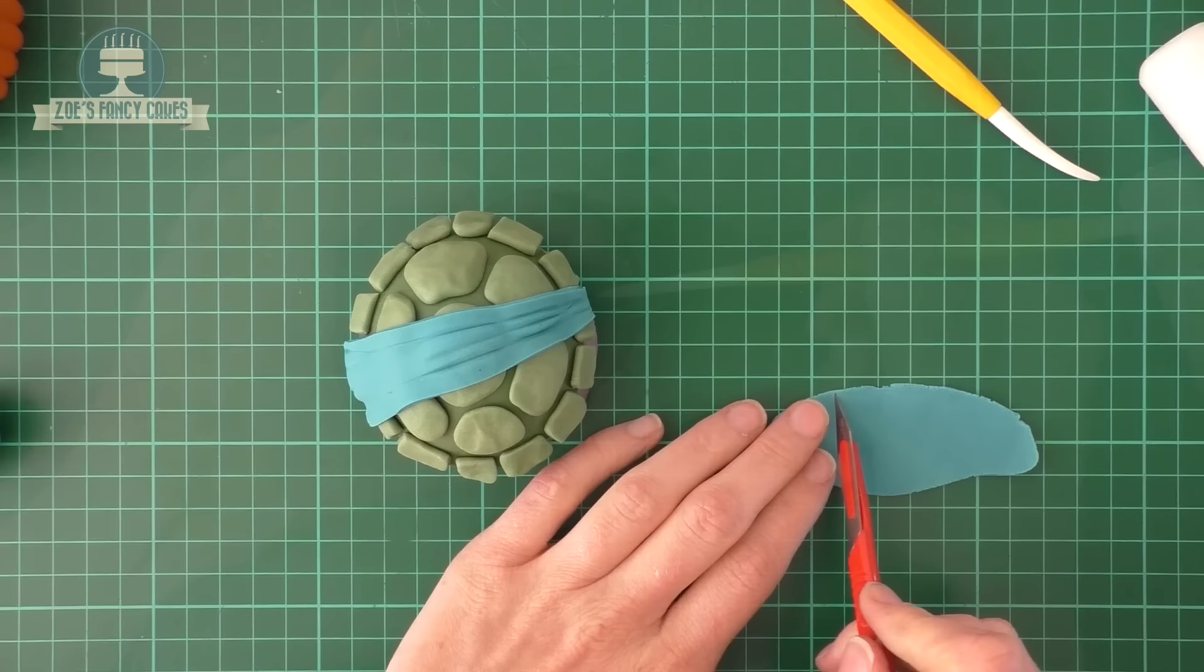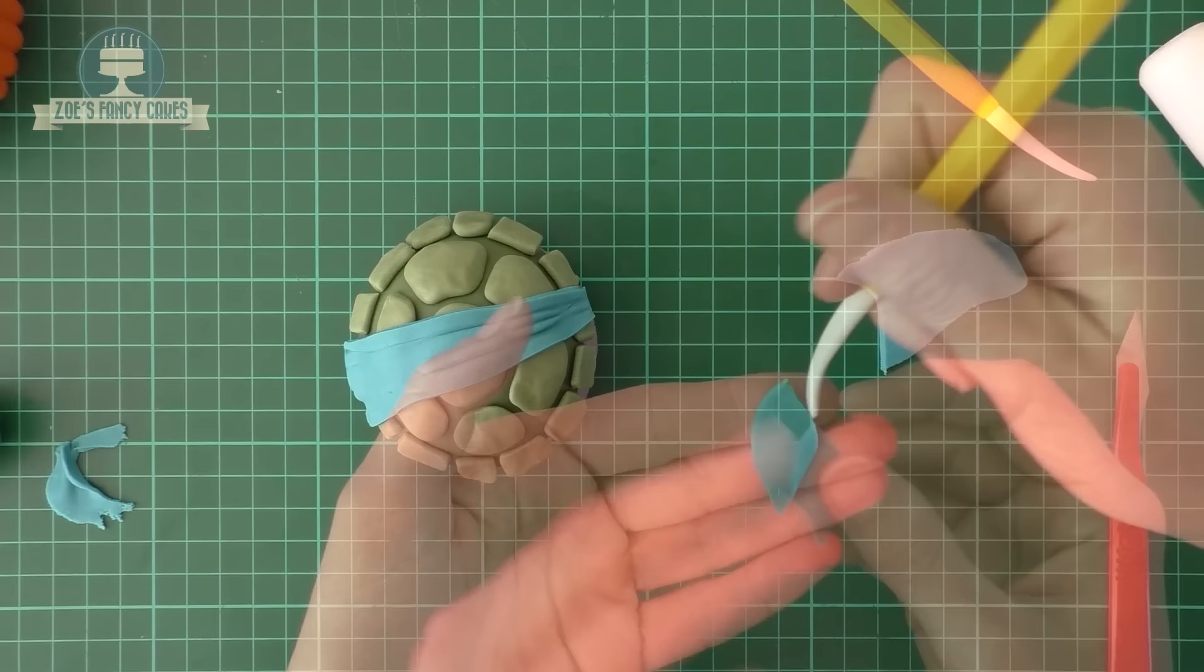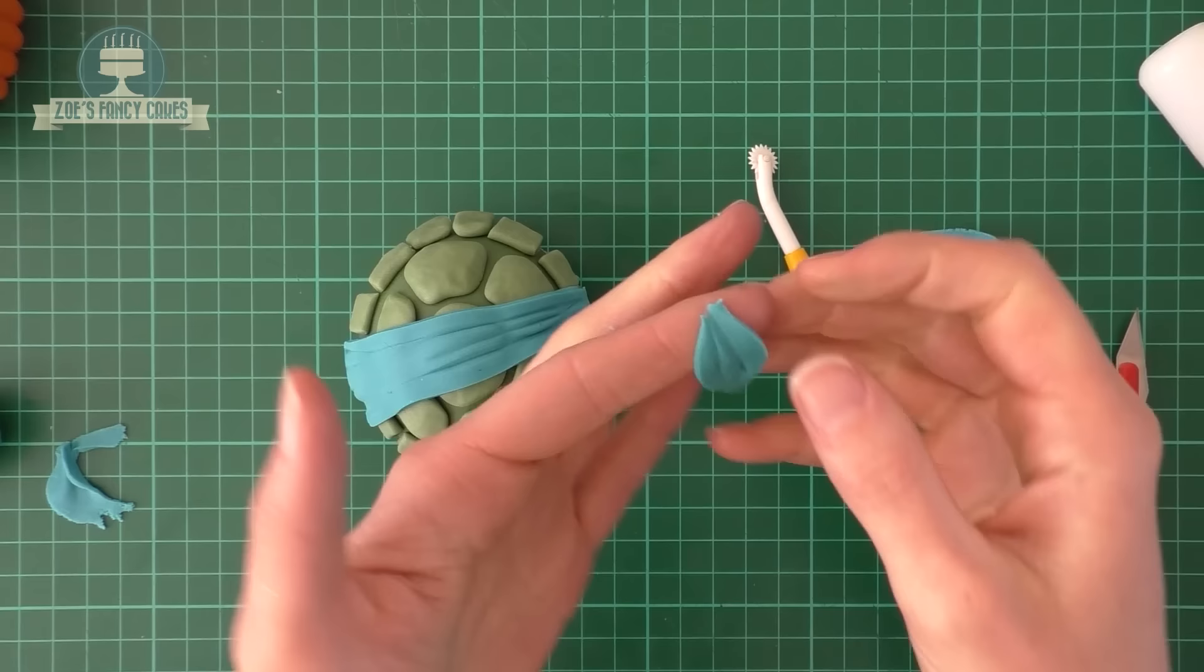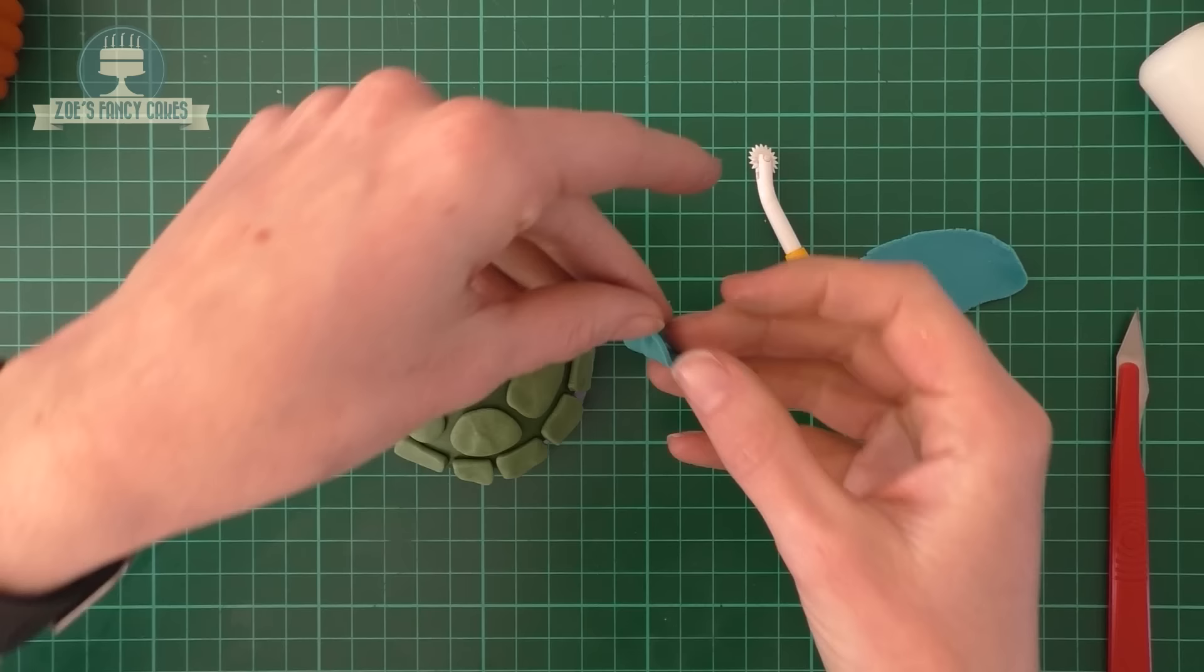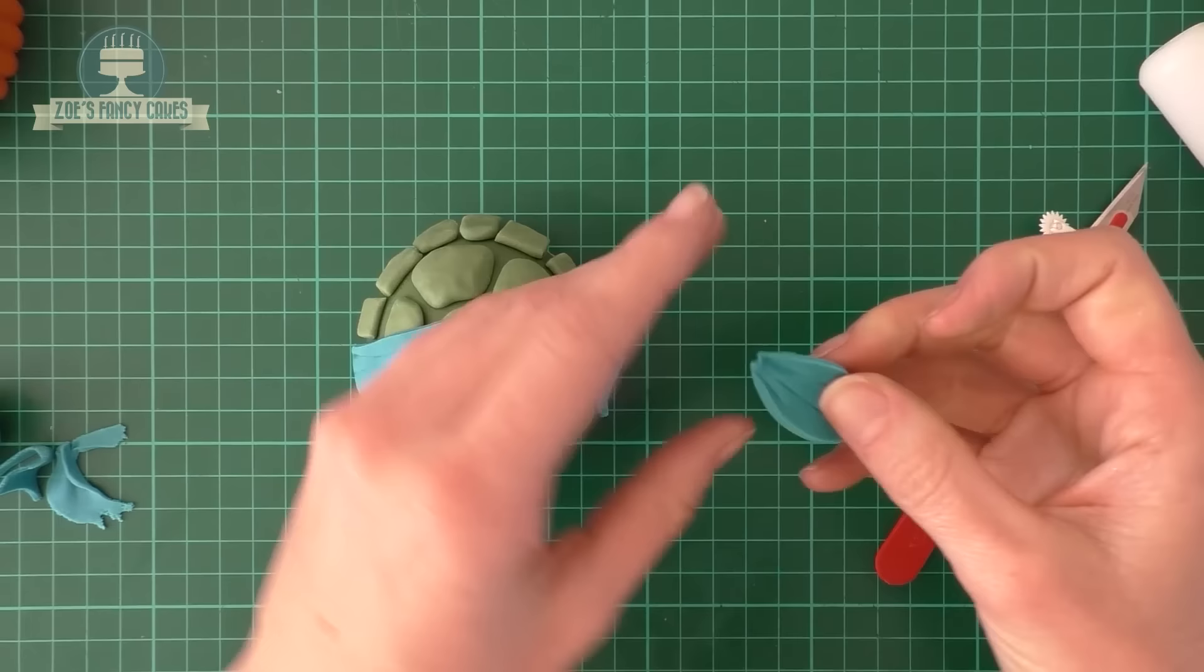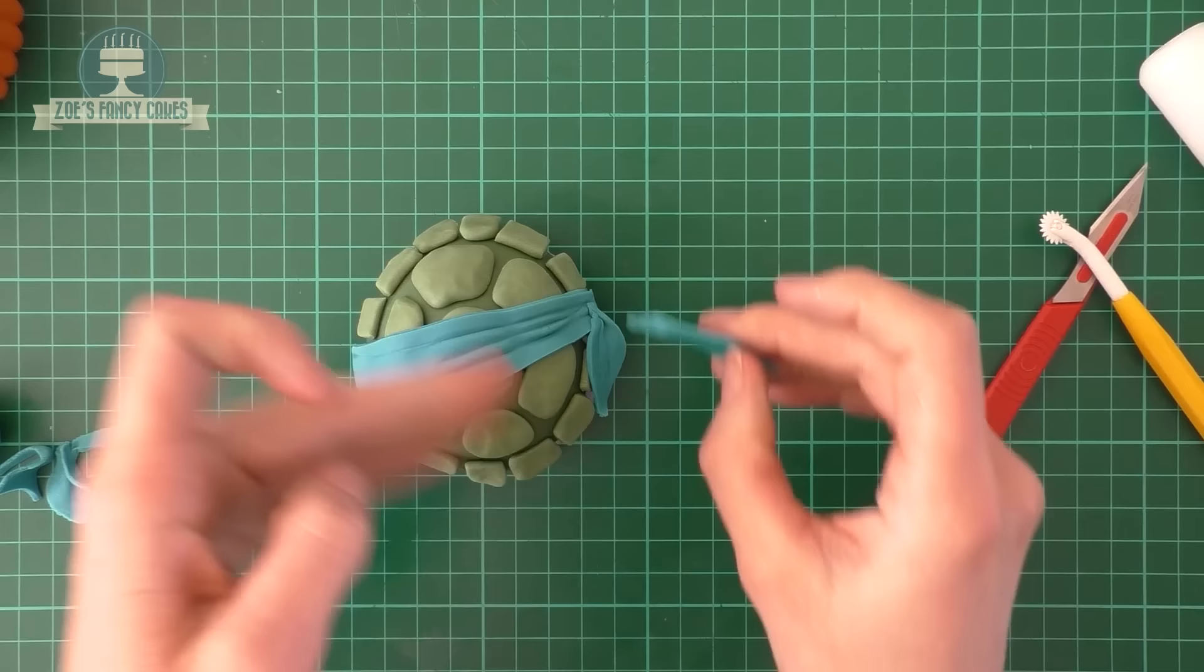Taking a bit more of the blue that's rolled out nice and flat, I'm going to cut almost like two leaf shapes. Again, my modeling tool just to add a couple of little lines that look a bit like creases. Give it a bit of a pinch together at the top. A little bit of water brushed on the back and we're going to put that against the thin end of that blue strip that we've put on. Then you can do the same with the second one. It'll just look like their little band's been tied in a knot at the end.